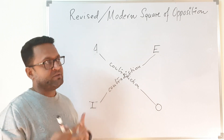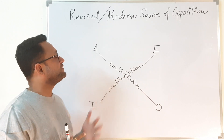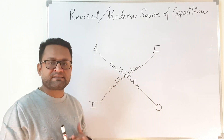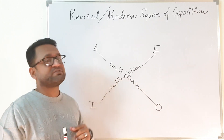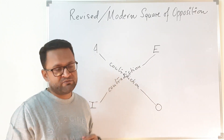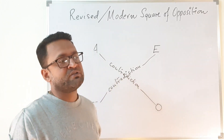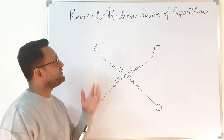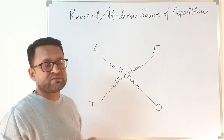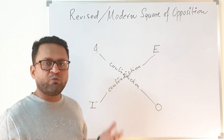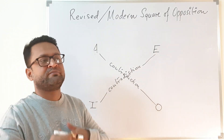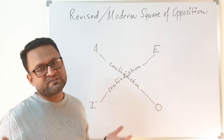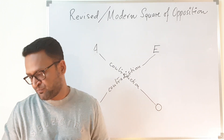In the modern square of opposition, there is only one relationship, and that is contradiction. The rest — contrary, subcontrary, and subaltern — are all gone. I hope you followed these two lectures on the squares of opposition: the first on the traditional square and the second on the revised or modern square. Whatever doubts or queries you have, you can always discuss them in class. Thank you.